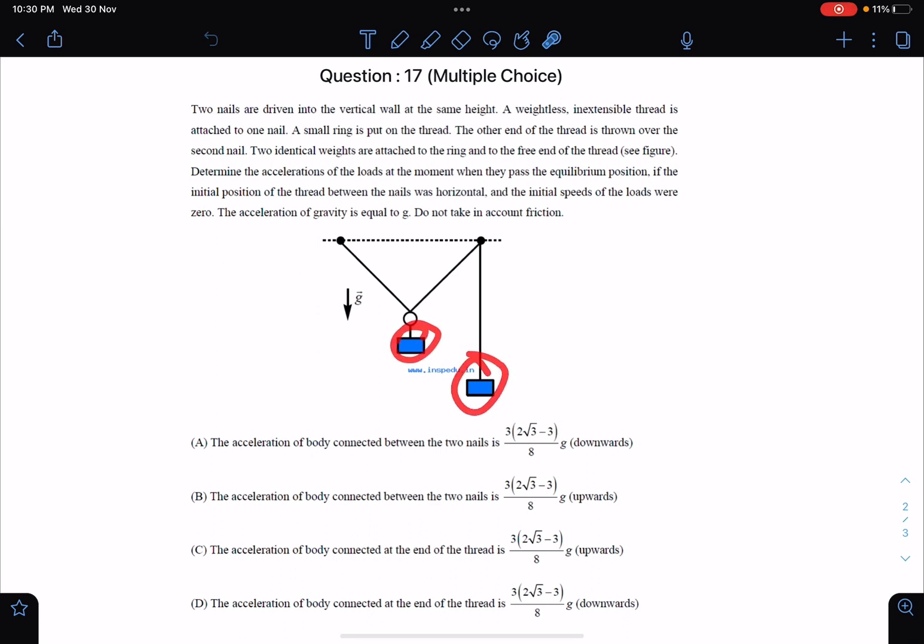One is attached here on the ring and one is attached at the free end. Determine the acceleration of the load at the very moment when they pass the equilibrium position, if the initial position of the thread between the nails was horizontal and the initial speed of the loads was zero. So from rest we are releasing, acceleration due to gravity G is given, and no friction anywhere. Just give it a try, it's a very nice problem.